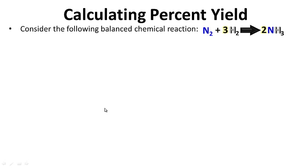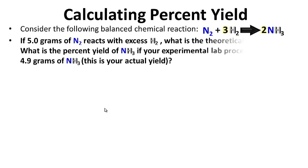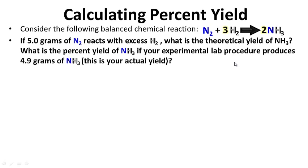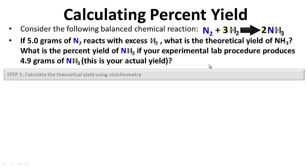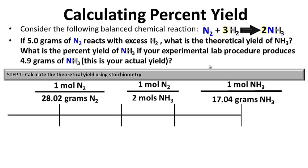Calculating percent yield: consider the following balanced chemical reaction. If 5 grams of N2 reacts with excess H2, what is the theoretical yield of NH3? What is the percent yield of NH3 if your experimental lab procedure produces 4.9 grams of NH3? Note: 4.9 grams is your actual yield. Notice you're only given one reactant amount — H2 is in excess, so you have plenty of it.